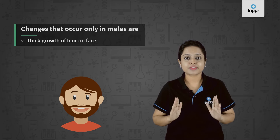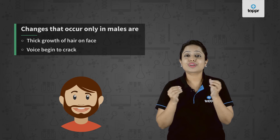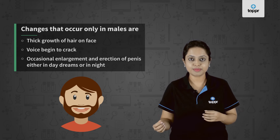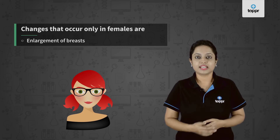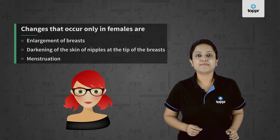Some changes that occur only in males are: first, development of thick hair on face; second, the voice of males begins to crack; and third, occasional enlargement and erection of penis. While some changes that occur only in females are: first, enlargement of breasts; second, darkening of the skin of nipples at the tip of the breast; and third, menstruation.